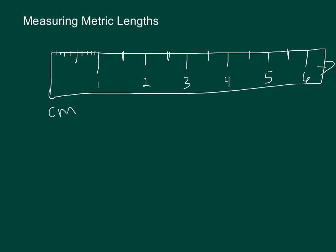And then you'll see smaller ones in between — counting 1 through 10 in each centimeter gap — and it keeps going.